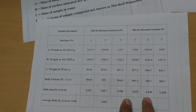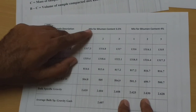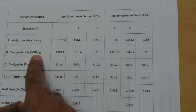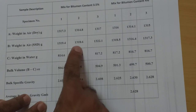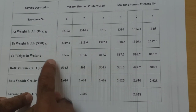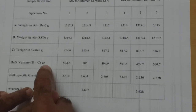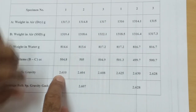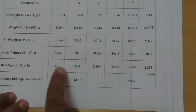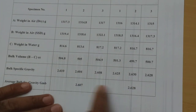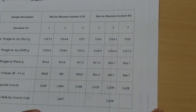For bitumen content of 3.5%, the same three samples are taken — dry weight of first, second, and third sample; SSD weight of first, second, and third. By subtracting B and C, I get the volume. Dividing dry weight by volume gives specific gravity values of 2.610, 2.604, and 2.608, with an average of 2.607.